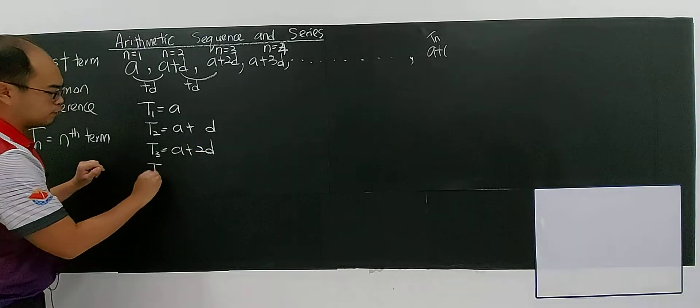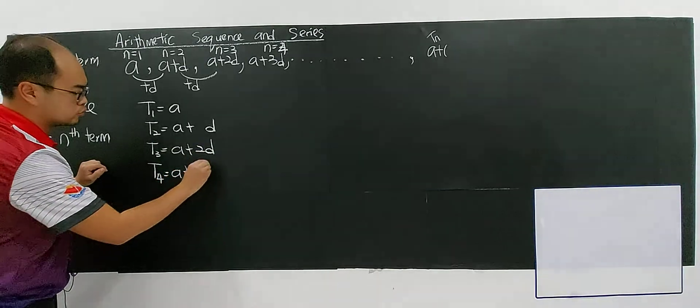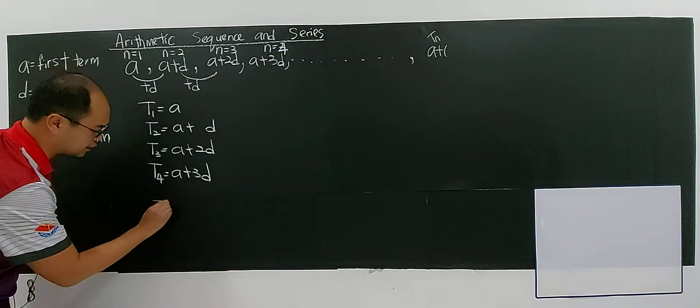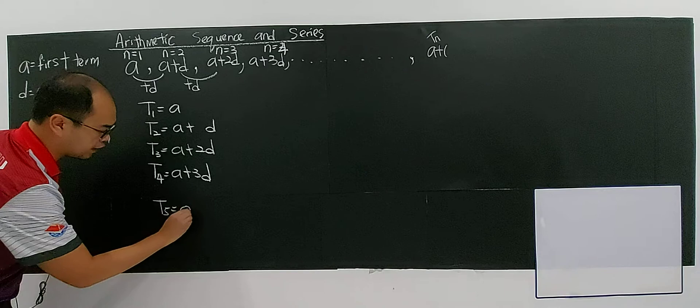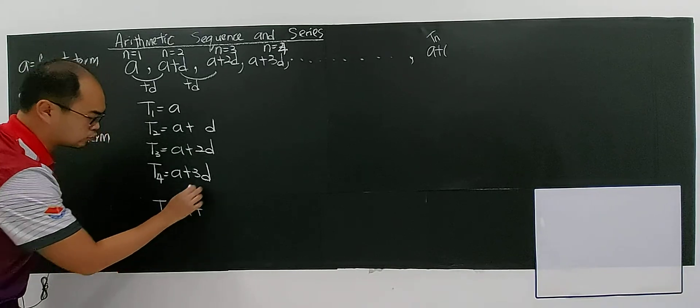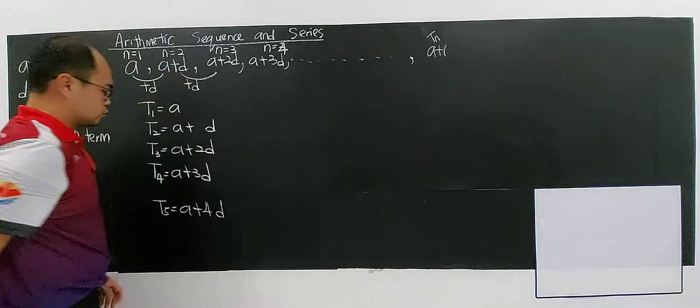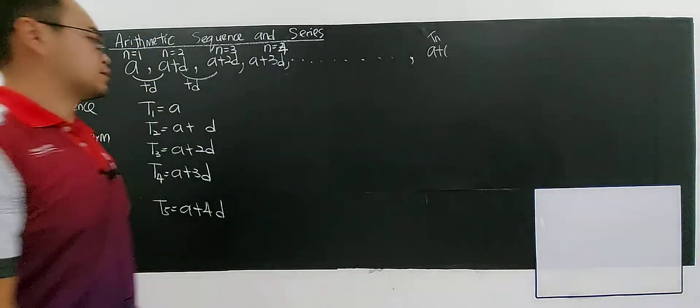If you have the fourth term, you will have A plus 3D. This is the fourth term. So if you keep writing, you will see some pattern. What can you see? 3D. This one will be 4D because you keep adding D.